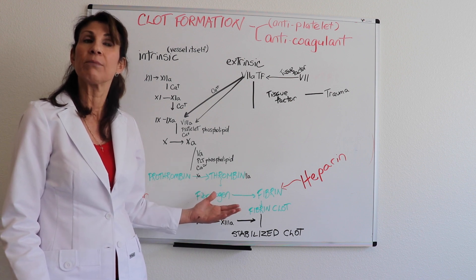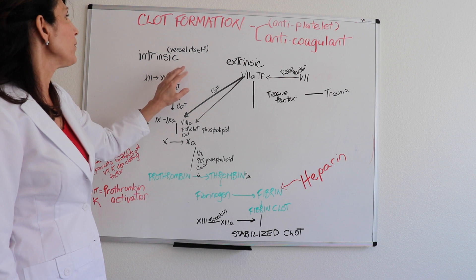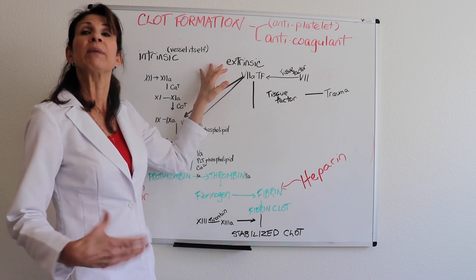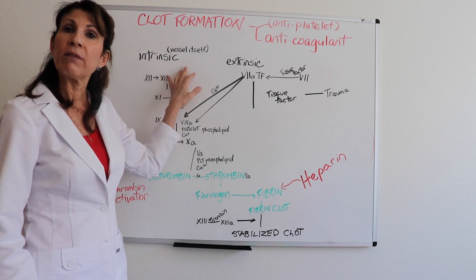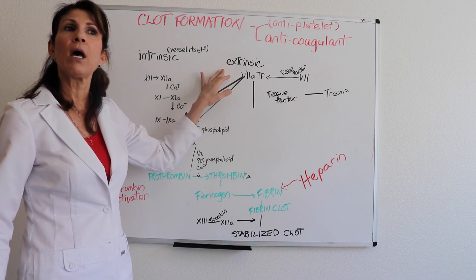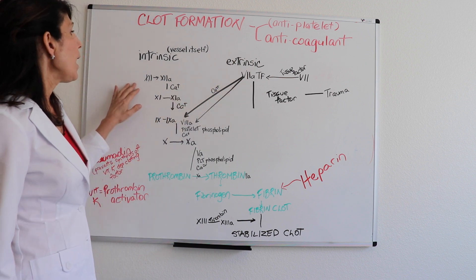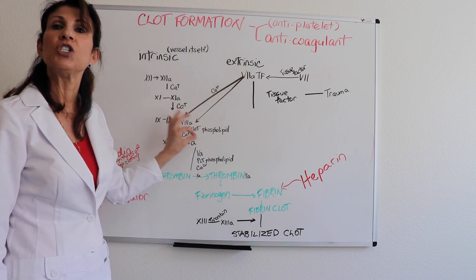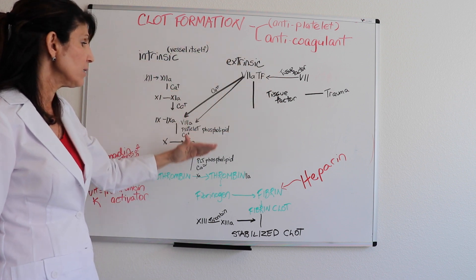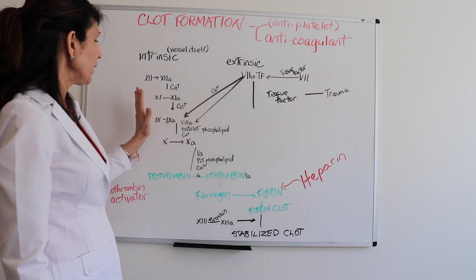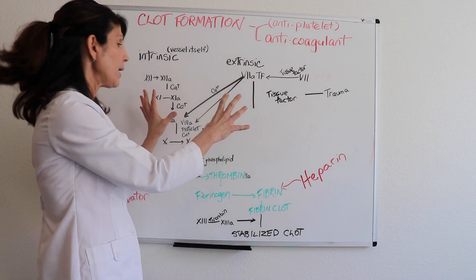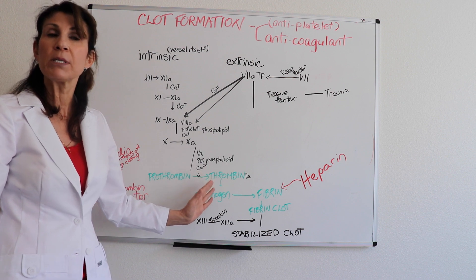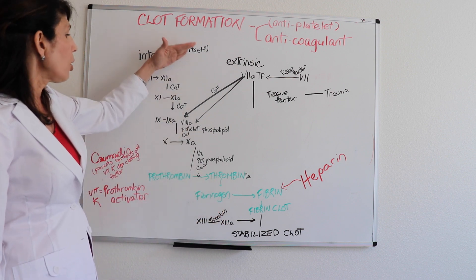There's the intrinsic and extrinsic source of platelet activation — the intrinsic being a problem with the endothelial lining itself, and extrinsic meaning some source of external trauma. The antiplatelet medications prevent clotting before it reaches the common clotting pathway. Now we're coming into what's called the common clotting pathway, and that is what we interrupt when giving anticoagulant medications.